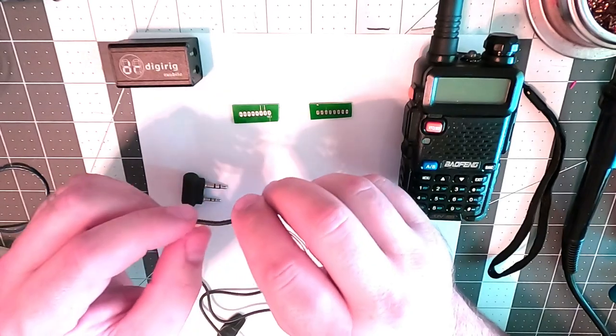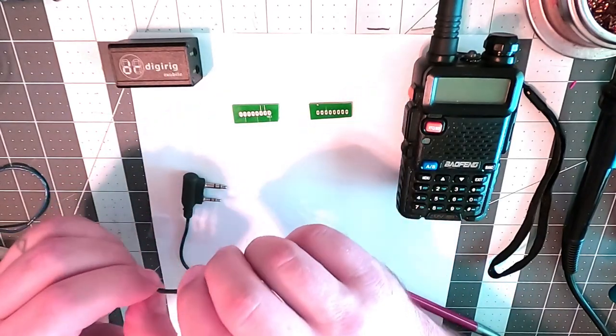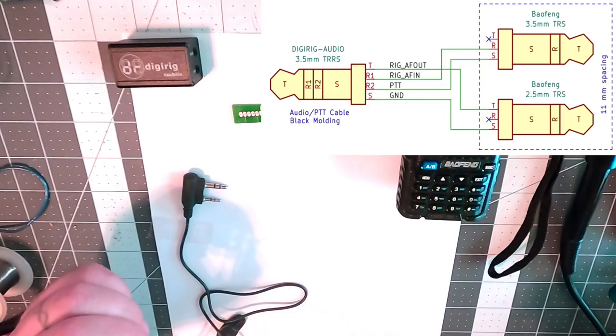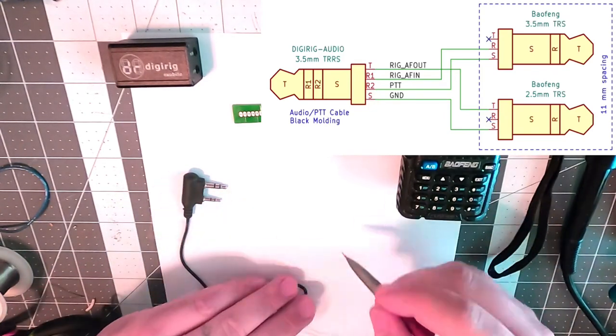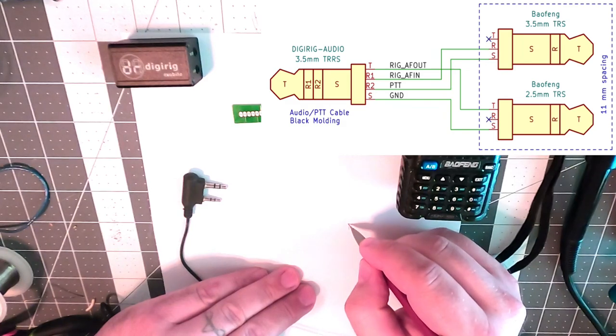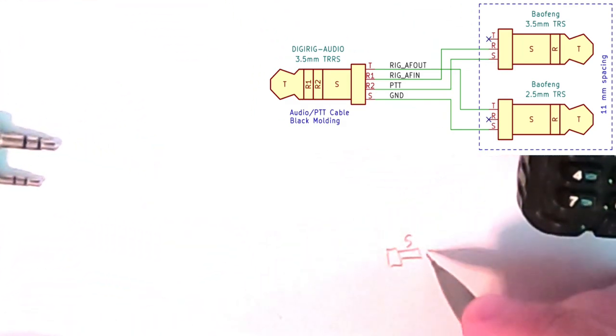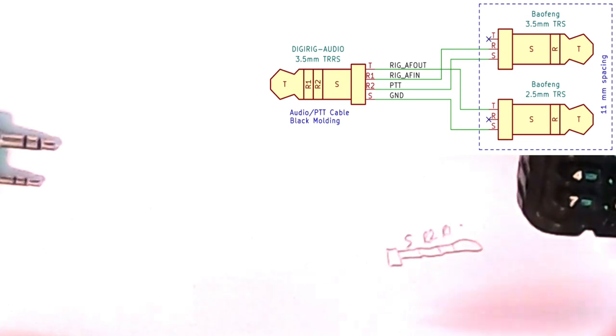So what we're looking for in this drawing is on the Digirig side. So I'm going to draw the plug here. We're going to have sleeve, then we have R2, R1, and then your tip.